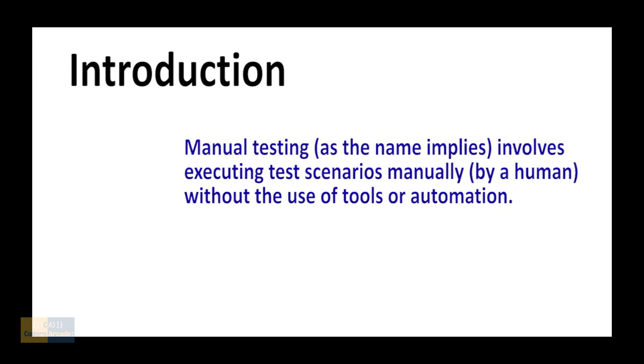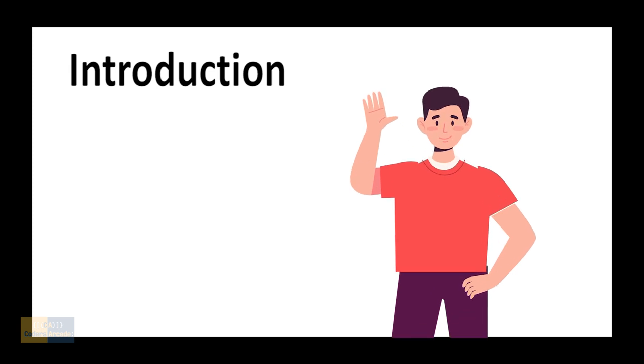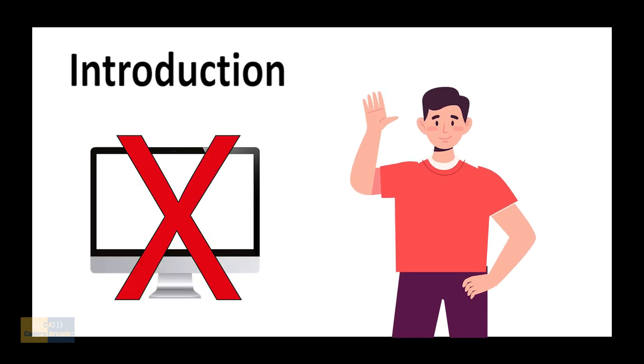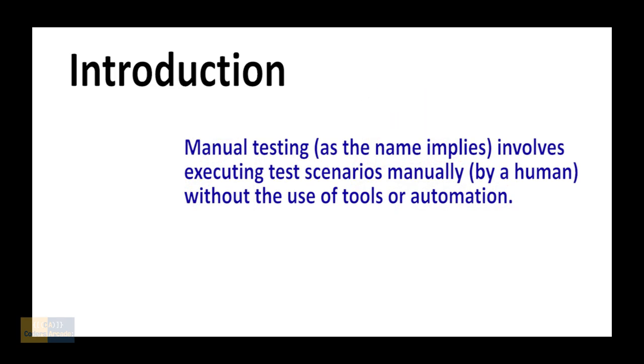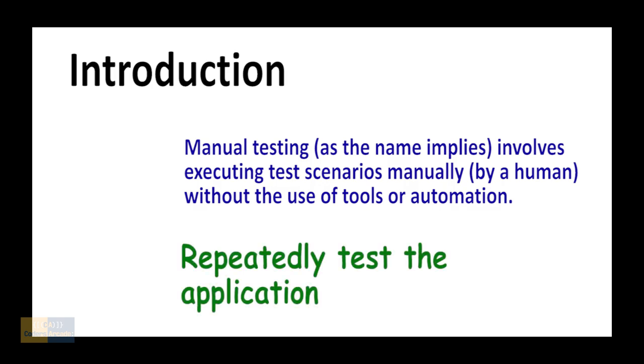Coming to the definition of manual testing, what exactly is manual testing? Manual testing is the testing that we perform on software wherein we take the help of a human. A computer is not required here for testing, a human is involved in testing here. That is why it is called manual testing. And here what we do, we test the application repeatedly again and again in order to catch defects.